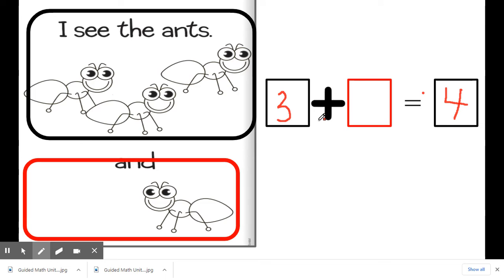So in our first box we're going to write the number three because there were three ants first. And remember since we're practicing addition by joining. When we join something that means we're adding something together. So we use the plus sign. Now if you notice this is our second group. How many ants are in our second group? One. So I'm going to write the number one in this box. So now my number sentence says three plus one equals four.